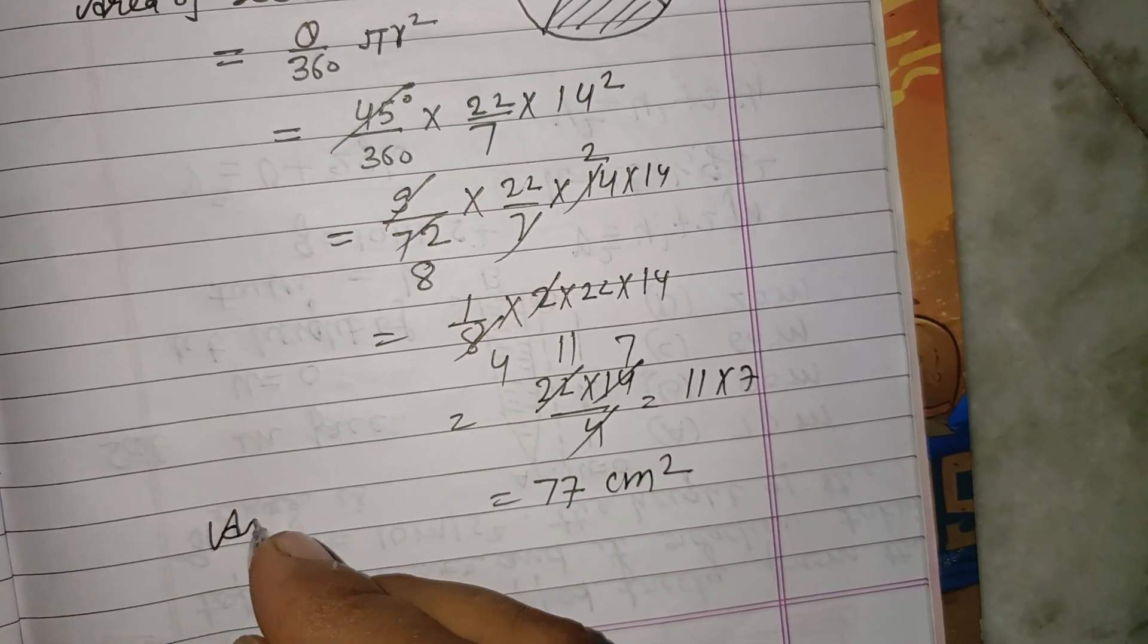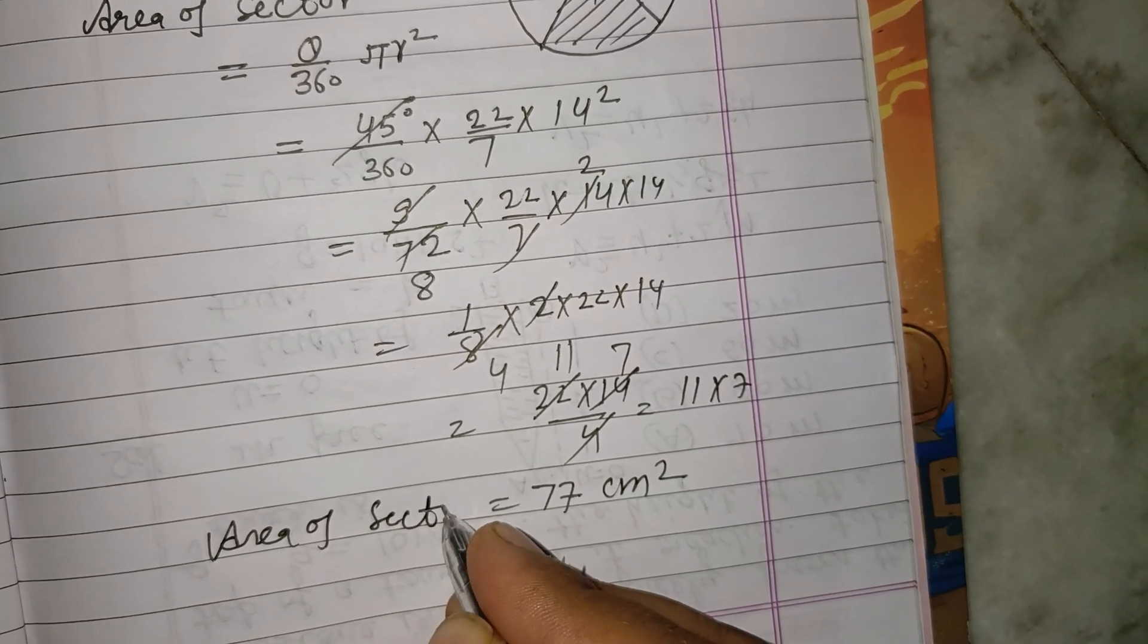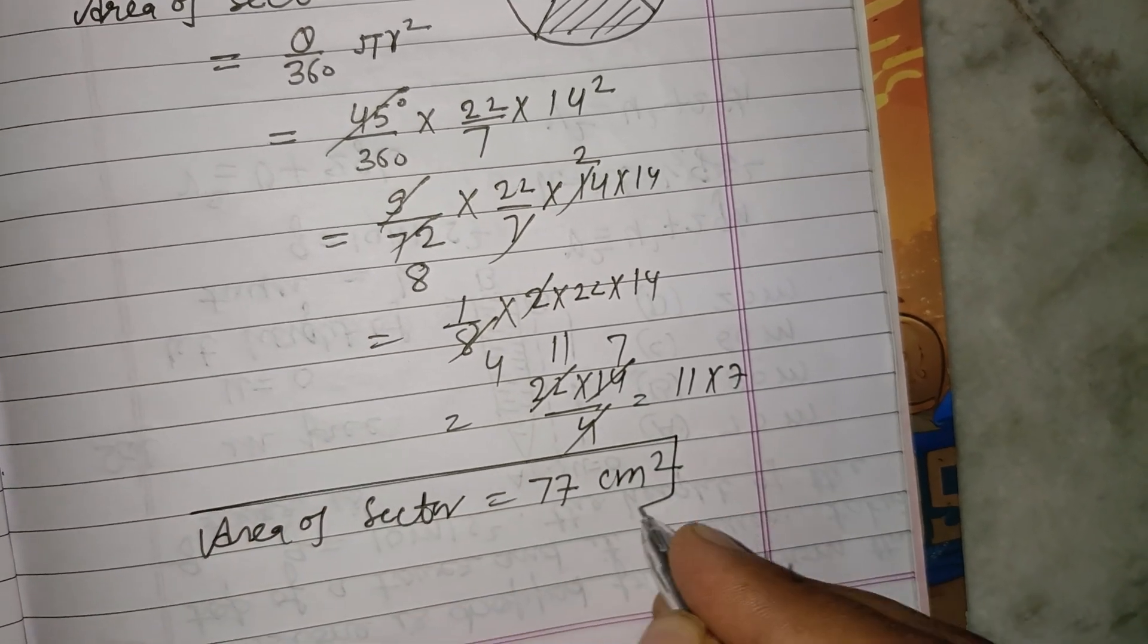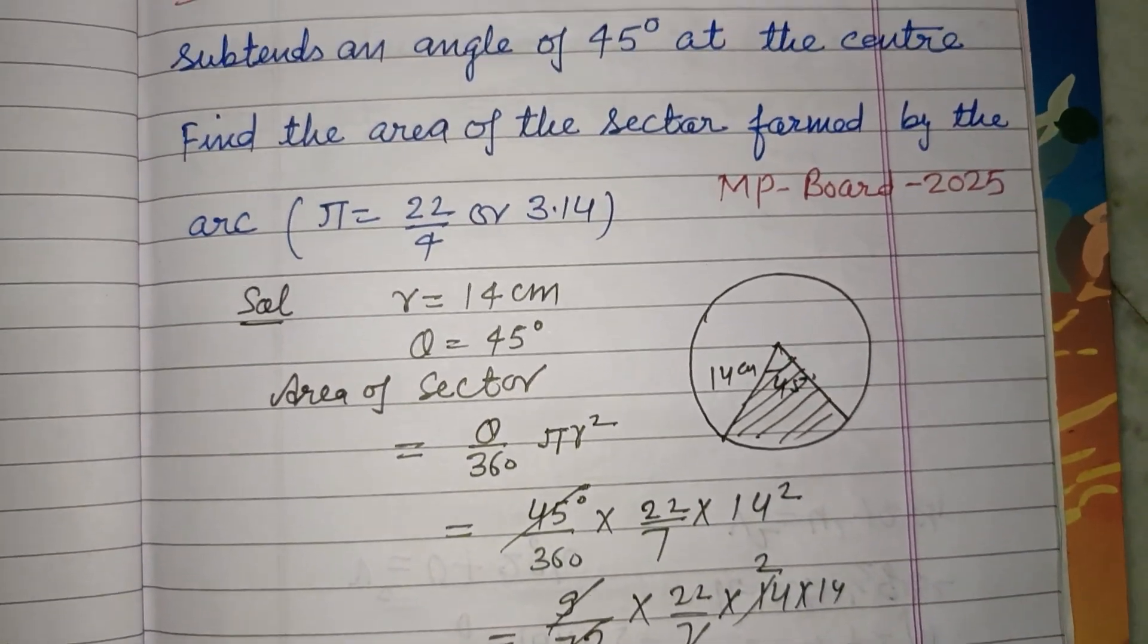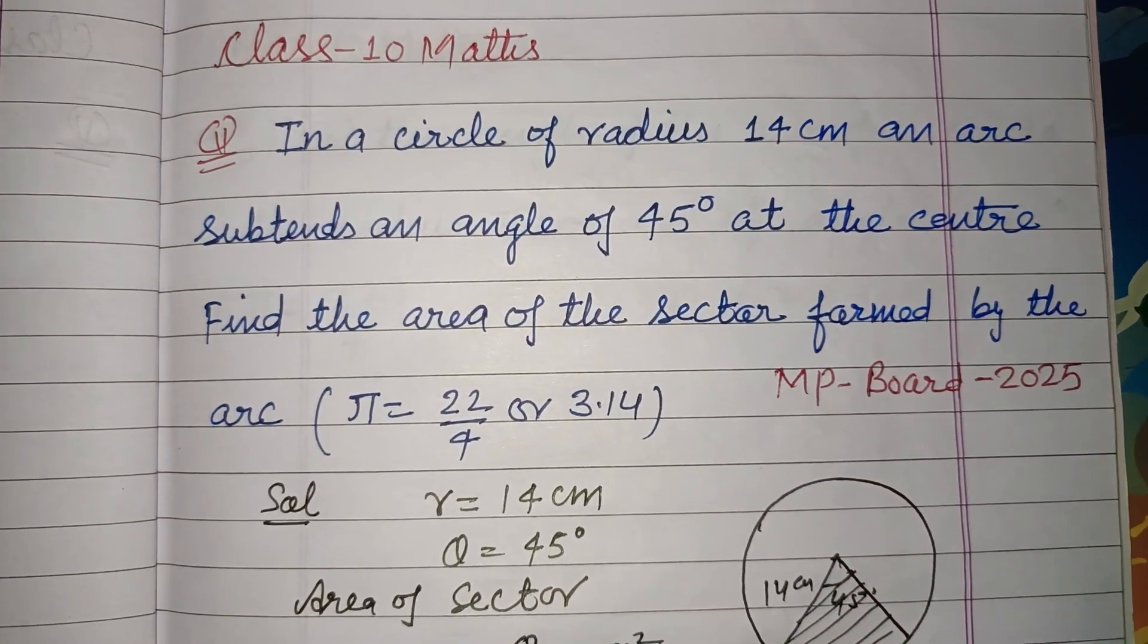So area of sector is 77 centimeter square. I hope you got it. Please like the video, subscribe the channel, thanks for watching.